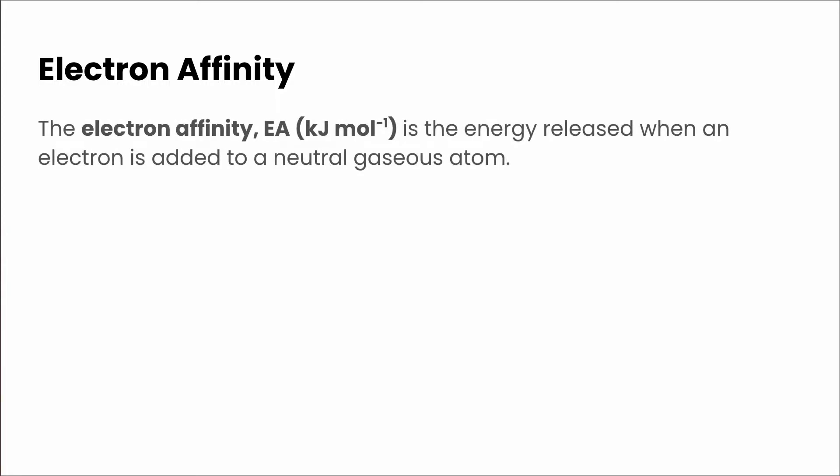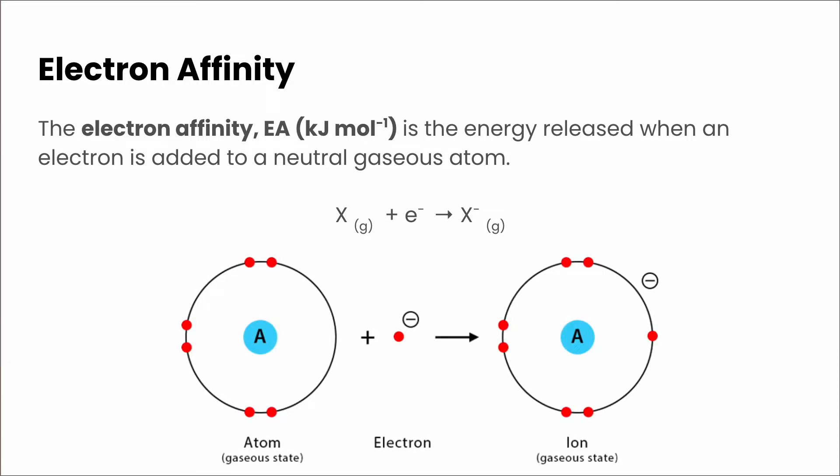Next, we need to define electron affinity. This is essentially the opposite of ionization energy, in that electron affinity is defined as the energy released when an electron is added to a neutral gaseous element. If we were to represent this with an equation, we would say x, which is our neutral gaseous element, plus an electron is going to make an x minus — we've added an electron to it. When you look at electron affinity values on the periodic table, they are all negative values, and the negative sign just means that energy is being released.